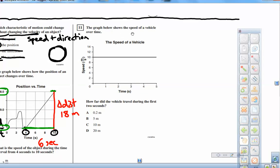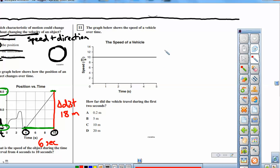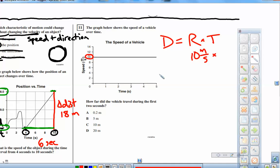So here, number 11, the graph below shows the speed of a vehicle over time. Notice here the speed is constant in this time. How far did the vehicle travel during the first two seconds? So that's really a distance equals rate times time problem. So to find out how far you go, you need to know the speed. Well, just read it off the graph. It's constant. It's 10 meters per second times how many seconds you go for. Well, during the first two seconds, it says. So multiply that by two seconds and you get 20 meters per second. So 20 meters, not per second, the seconds cancel and you get 20 meters. So the answer is D.